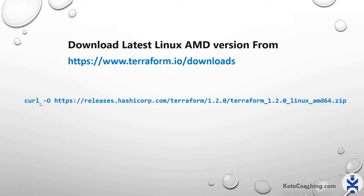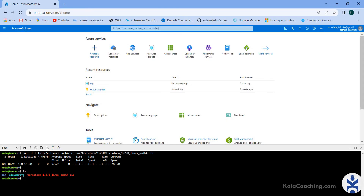Use the command `curl -o` and paste the URL. That is the complete command you will use to download it to Azure Cloud Shell. If you run this command, you can see the file has been downloaded.